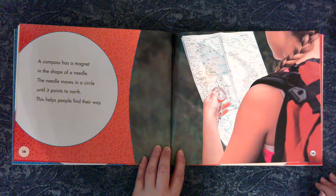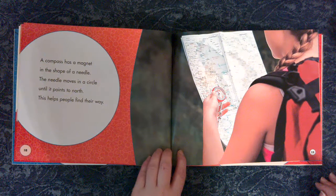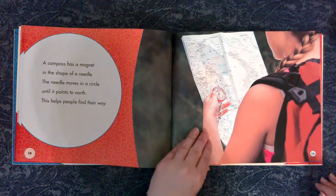A compass has a magnet in the shape of a needle. The needle moves in a circle until it points to north. This helps people find their way.